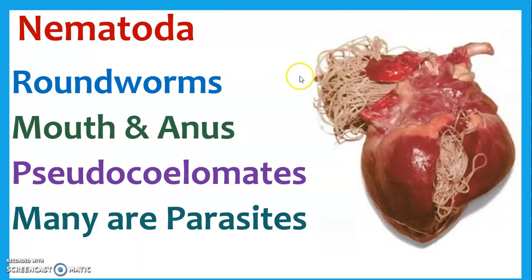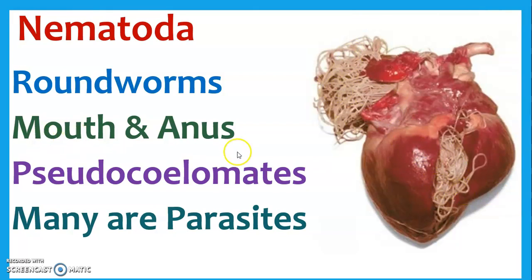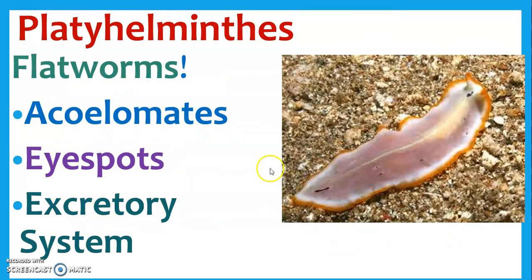Nematodes are another phylum — these are roundworms. A lot of these are parasites; this is obviously a heartworm in a dog, which is why you want to make sure your dog is getting its pills. They have both a mouth and an anus — they are pseudocoelomates. So unlike just having food come in and go back out through the mouth, now we actually have a pretty smart digestive system.